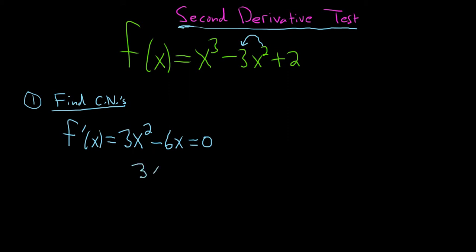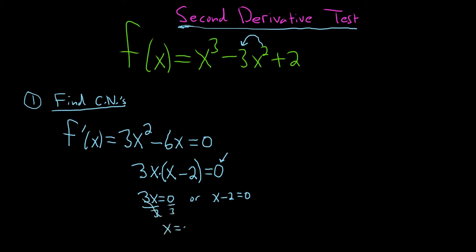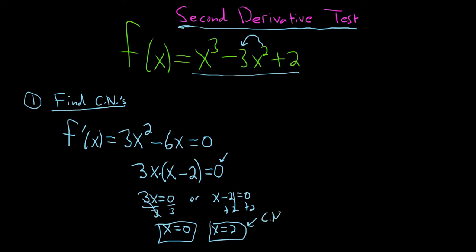We can factor out 3x, giving us 3x(x minus 2) equals 0. Setting each factor equal to 0: 3x equals 0 gives x equals 0, and x minus 2 equals 0 gives x equals 2. As a check, both values are in the domain since this is a polynomial with domain all real numbers. These are our critical numbers.